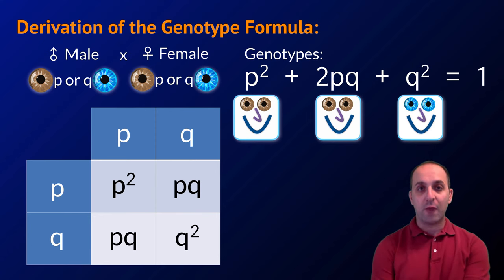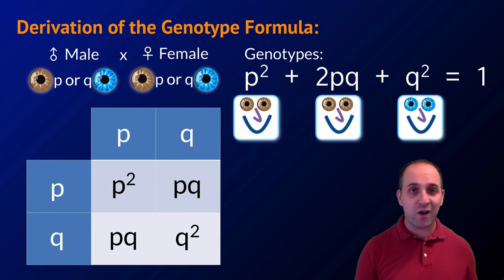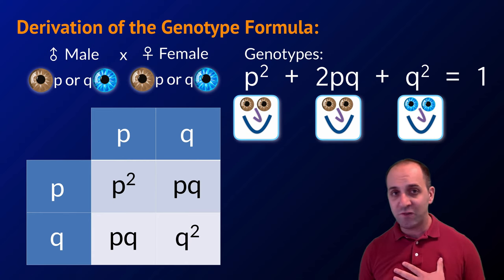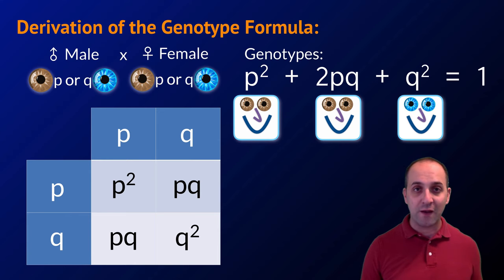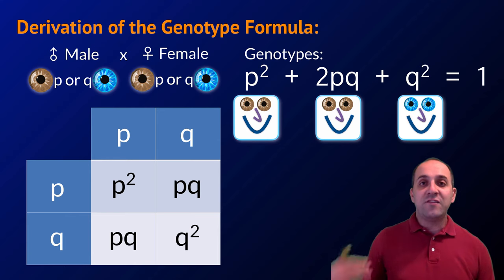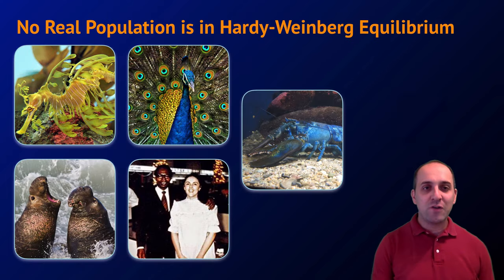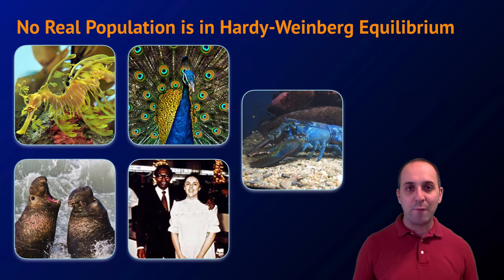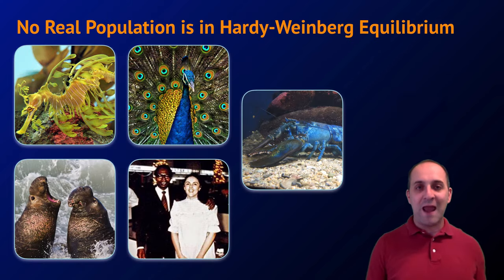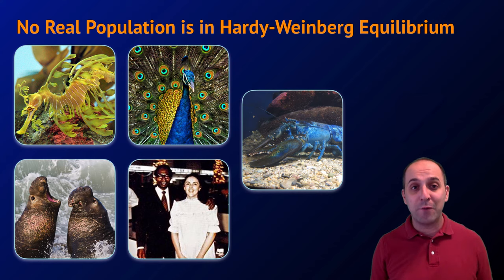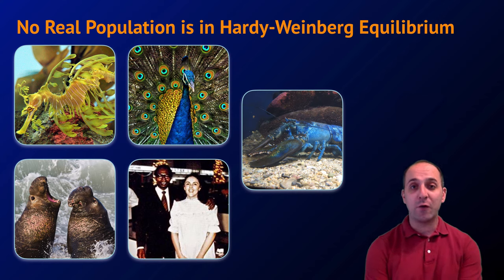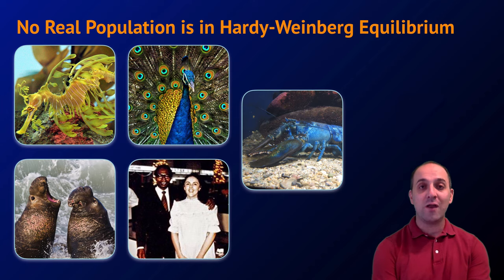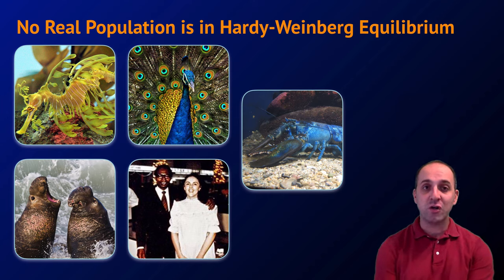We're not going to use this video to solve Hardy-Weinberg problems — there are other places to do that. Instead, I want to talk about the concept of Hardy-Weinberg equilibrium and the fact that no actual population is really in Hardy-Weinberg equilibrium. It is an ideal non-evolving population.